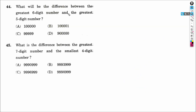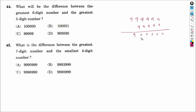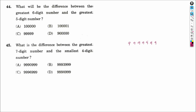What will be the difference between the greatest 6-digit number and the greatest 5-digit number? The greatest 6-digit number is 999999 and the greatest 5-digit number is 99999. Subtracting gives 900000 — that is 9 lakh. So D is our answer. Next: the difference between the greatest 7-digit number (9999999) and the smallest 4-digit number (1000) is 9998999. D is our answer.